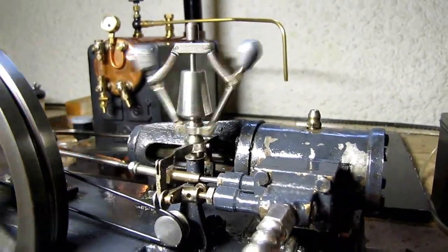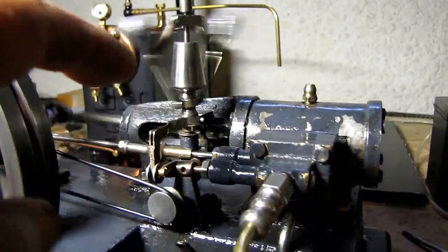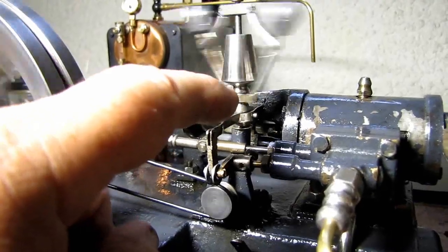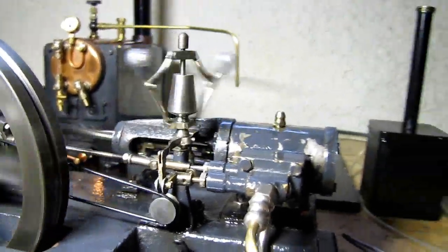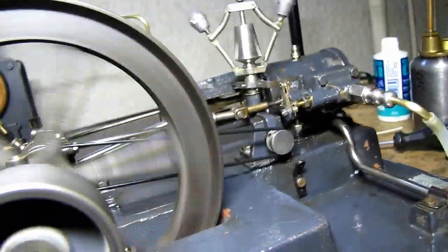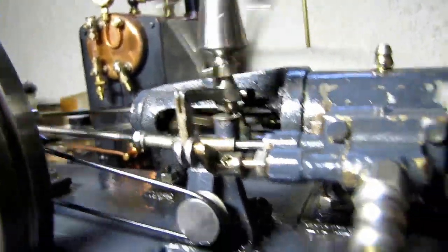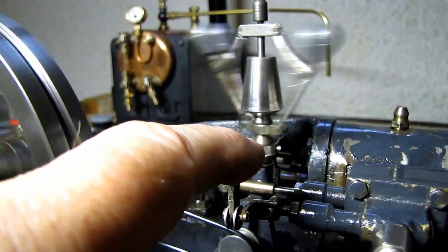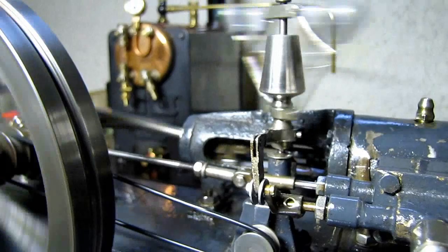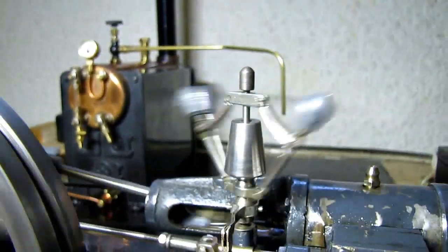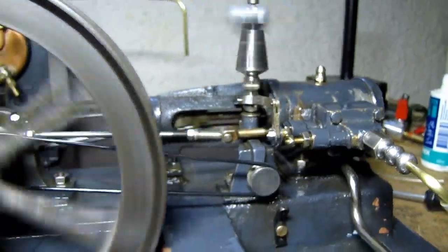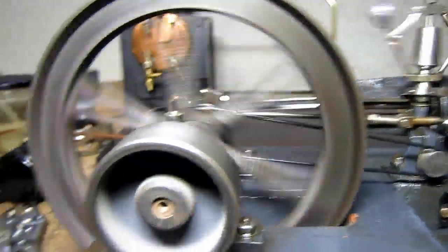You can see the governor turning away there. If I bypass it by opening this throttle manually, there's not enough to show it this way. There you go, if I bypass the governor, she'll build up speed and come up and close it again when I let it go. So that is a governed speed if you like. Nice slow charger.